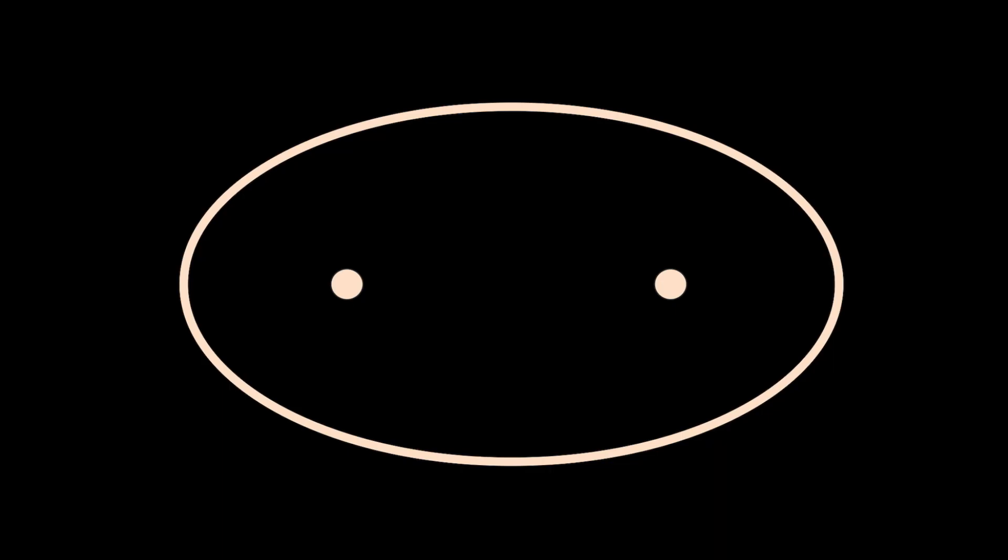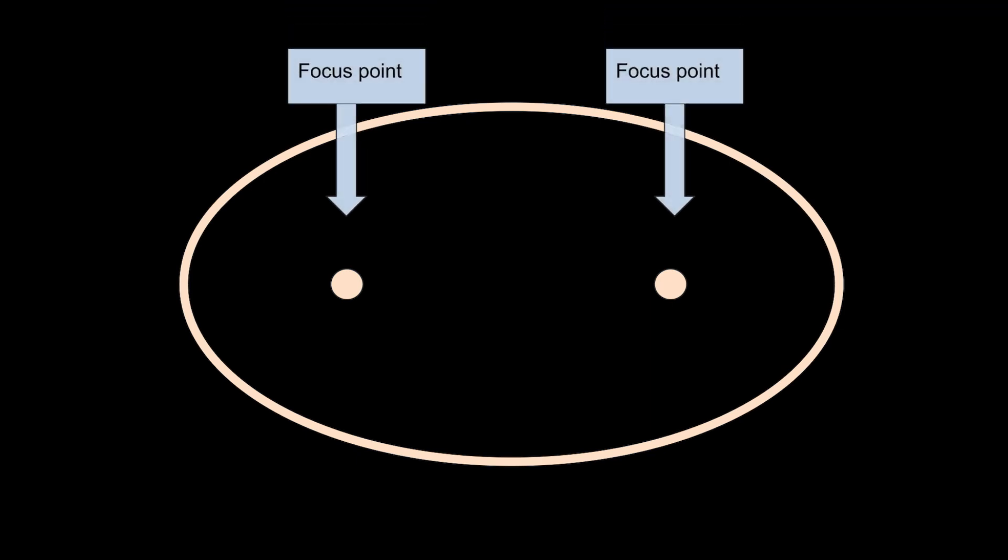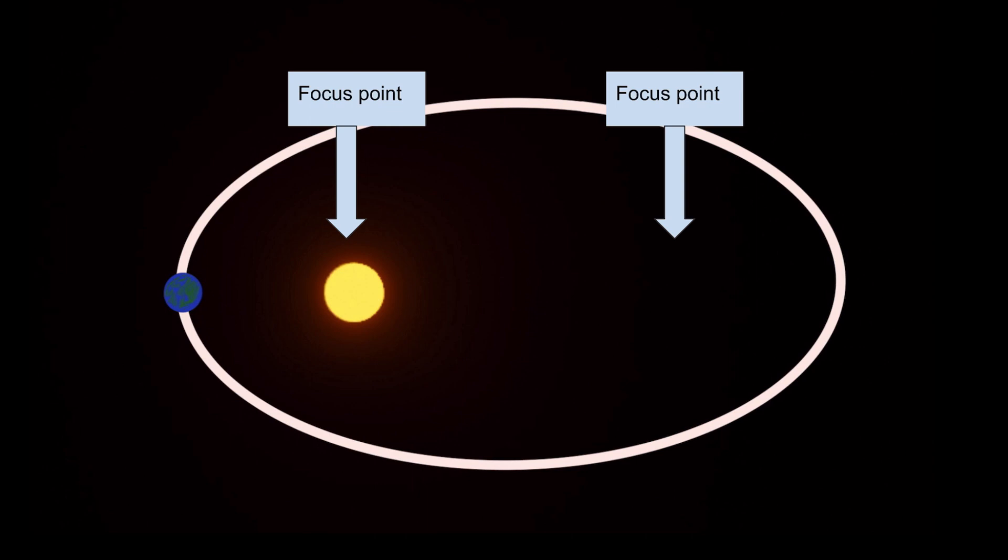Inside of an ellipse, there are two focus points. Each of these focus points lies on the middle of the ellipse's longer side. In our solar system, the Sun lies at one of these points, while the other one represents just empty space.